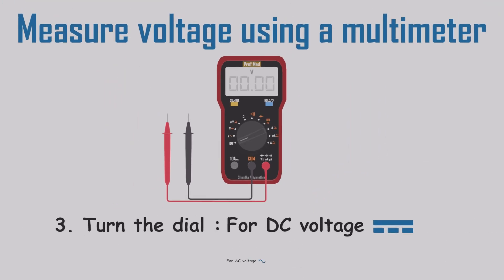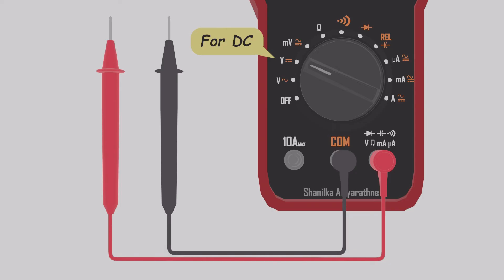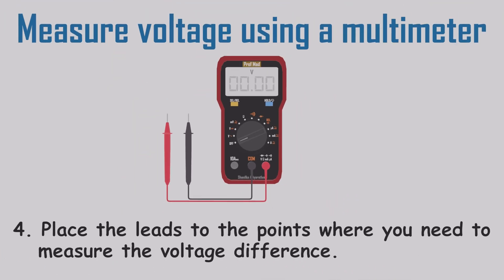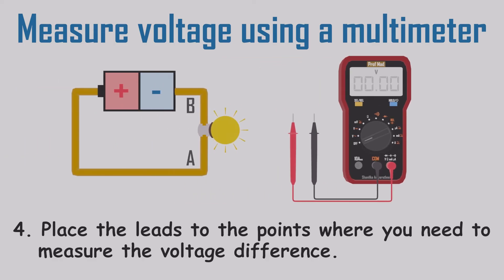Turn the dial to AC volt range if you are measuring AC voltage, and DC volt range if you are measuring DC voltage. Place the leads to the points where you need to measure the voltage difference. Let's measure the voltage between the light bulb. We can place the two leads at point A and B. Since the battery is a DC source, we have to turn the dial to DC volt range. Then we have to place the two leads at point A and B. Finally, we can read the voltage value on display.